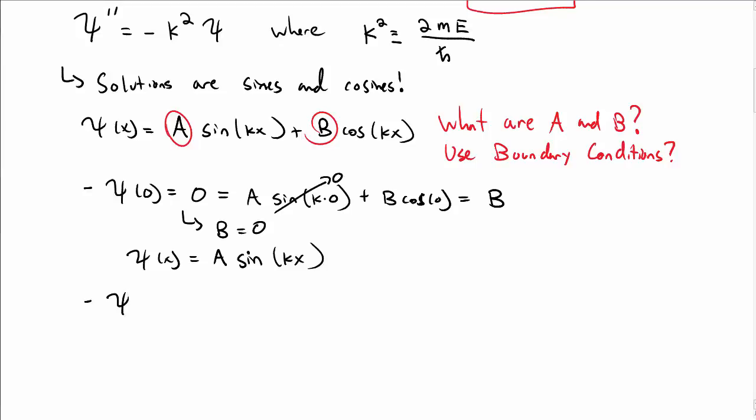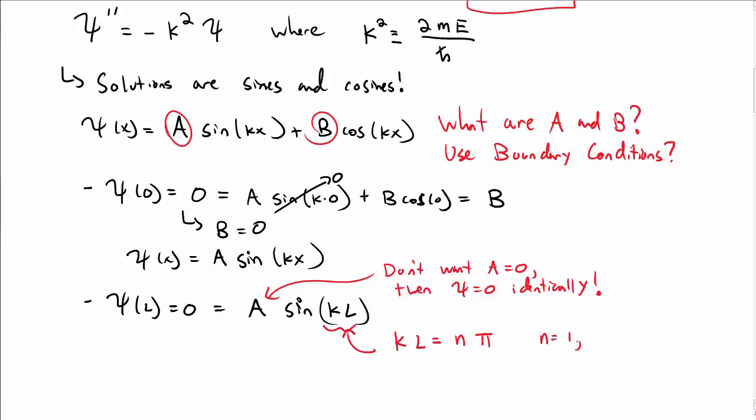ψ(x) then must be something like A sin(kx). At x = L, I have A sin(kL), which must equal 0. I could try setting A = 0, but I don't want that because then my whole wave function ψ = 0 for all x, and I don't have a wave function. So instead, I'm going to solve this by saying k times L must equal an integer multiple of π.